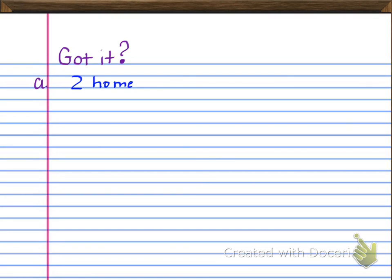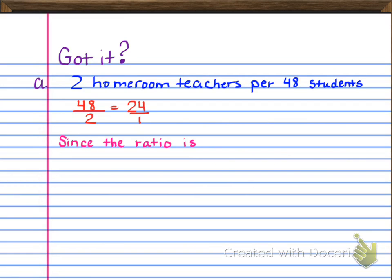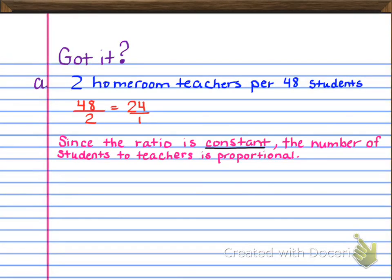Welcome back. All right, so the first thing that you needed to write here was that there are two home ring teachers per 48 students. That was the information in the problem. Then you have 48 to 2 equals 24 to 1. So since the ratio is constant, the number of students to teachers is proportional. So the word here is constant, the main important word. So you can go ahead and underline that word constant because that's the important word here. And they give you basically the proportional relationship up front from the beginning.